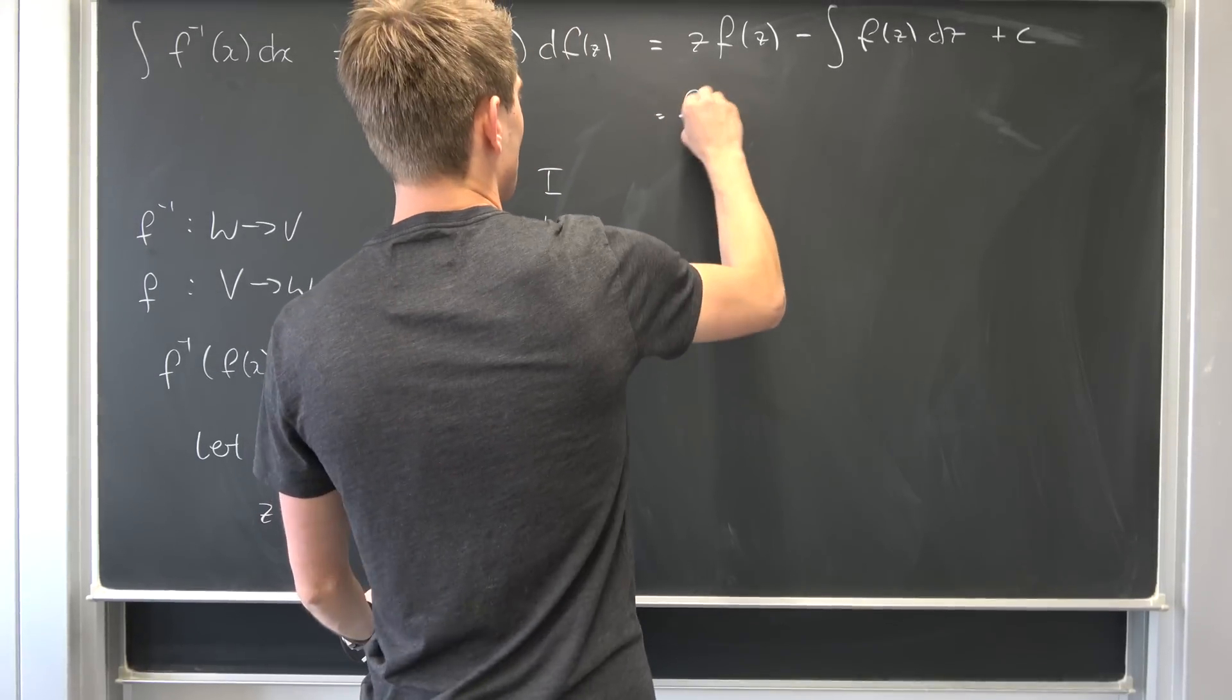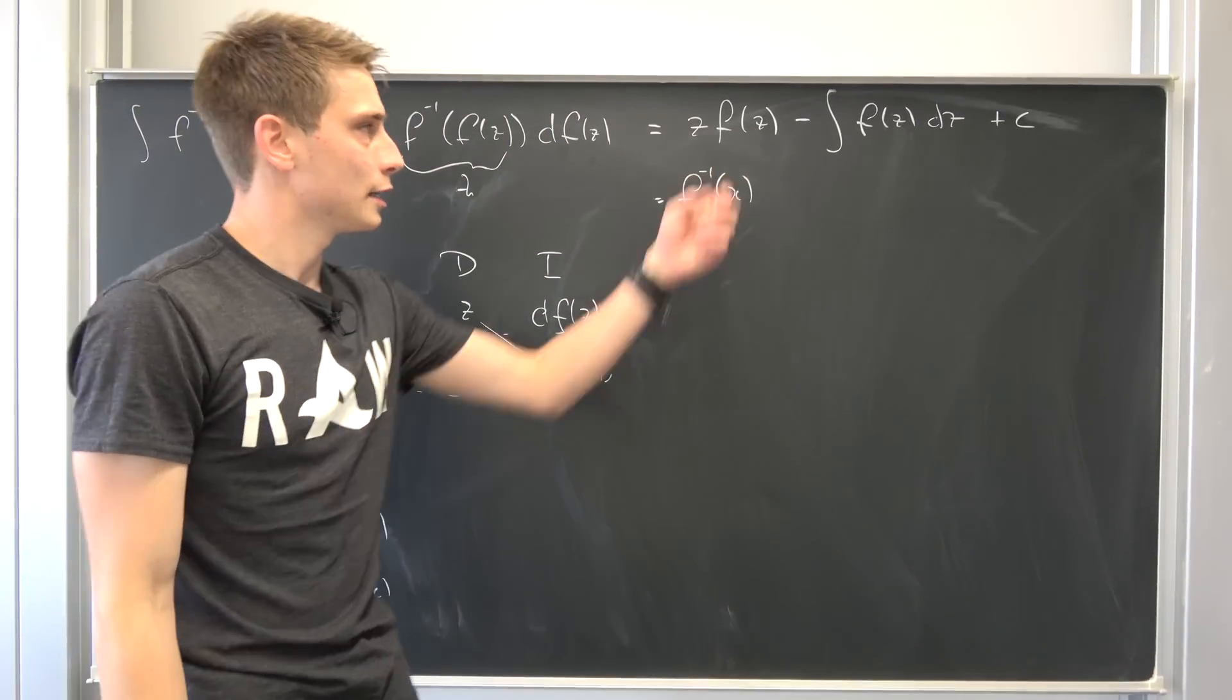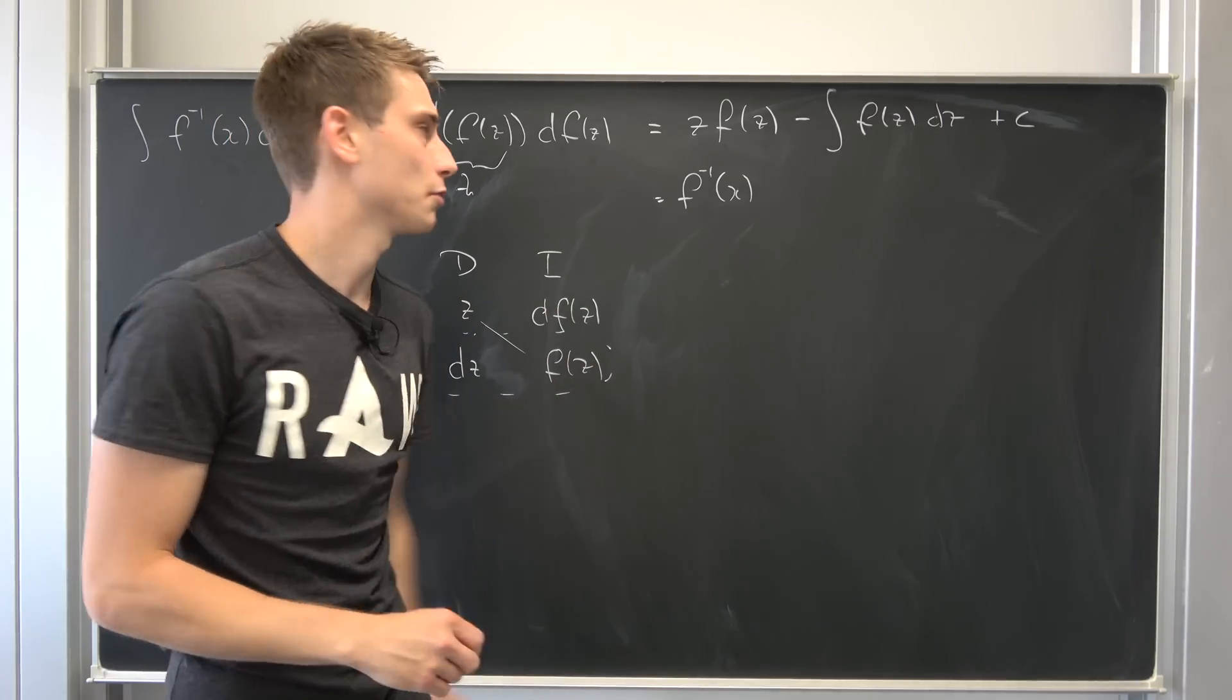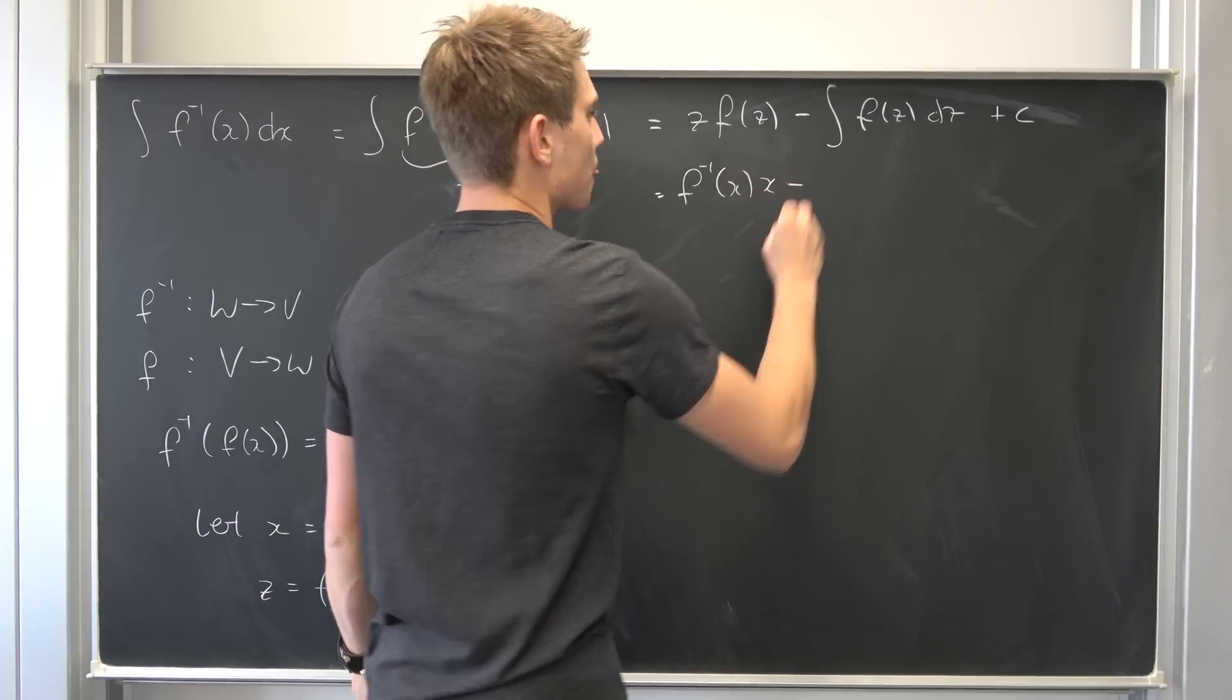Now we have the inverse function of x times the function of the inverse function, which is just the argument itself. So inverse function of the function of x is just x minus.